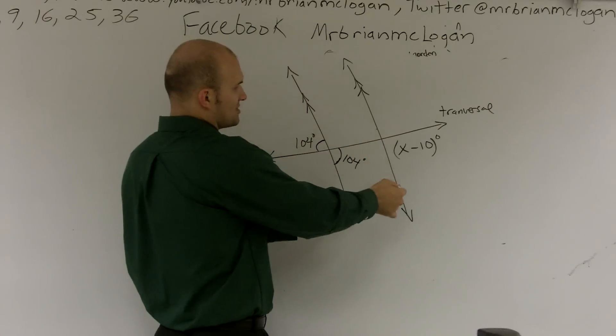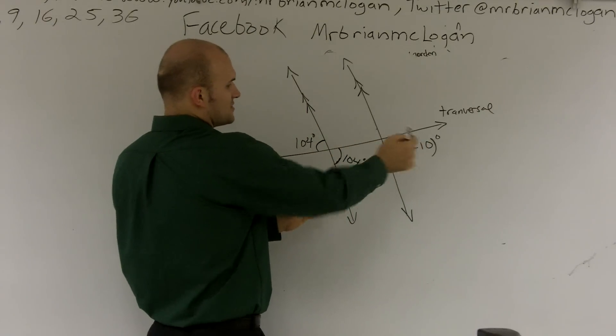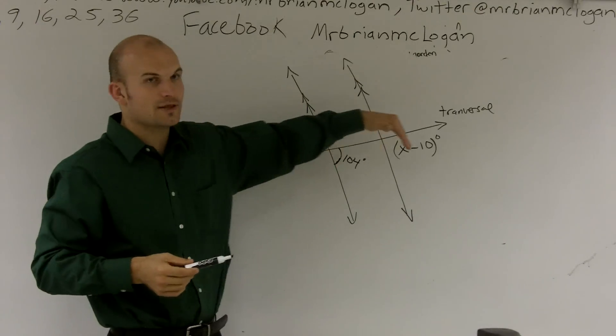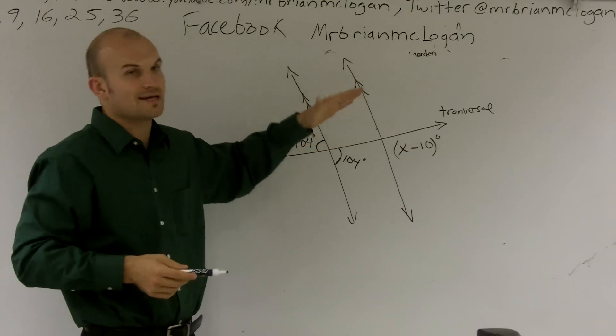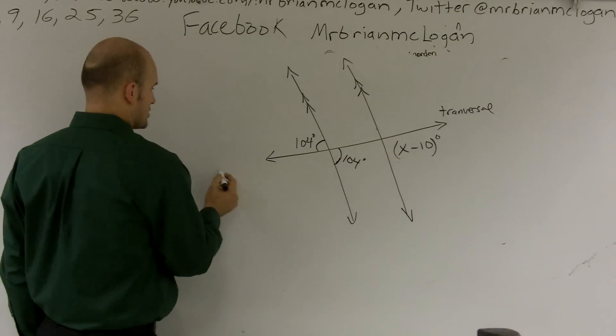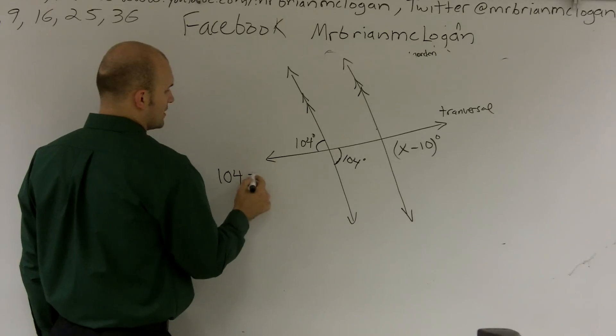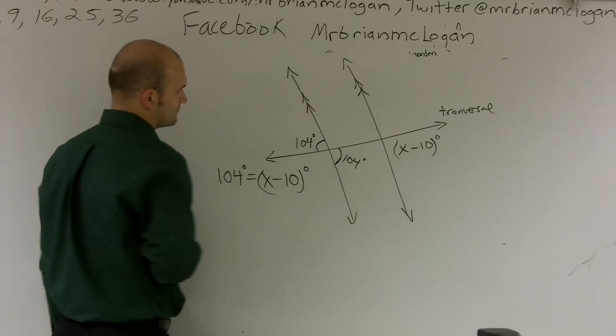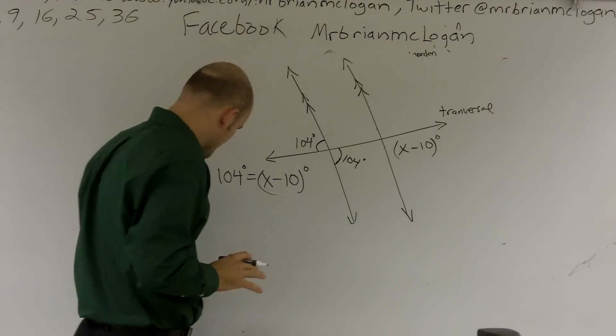Now since I have corresponding angles and I have a transversal, these two angles are what we call corresponding angles. They're on the same side of the parallel lines and also on the same side of the transversal. So corresponding angles are equal to each other. So I can write 104 equals x minus 10. That's one way you can look at it.